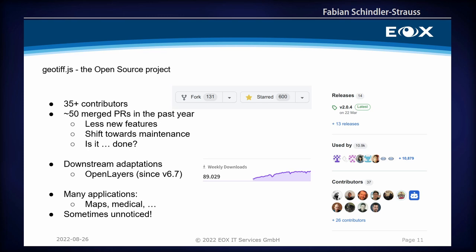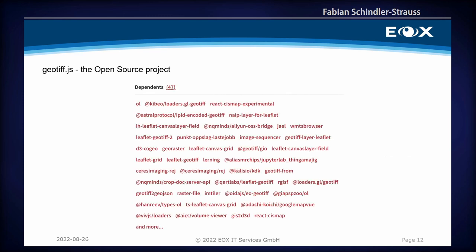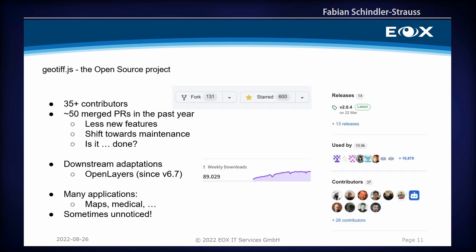There are many downstream projects — 47 dependents on npm. The one I really fell in love with is the OpenLayers integration, done really well and tied into their ecosystem. It's been adopted by OpenLayers since version 6.7. There are also many non-geo applications where this is used — for example, a medical application for viewing body scans or microscopic images, which is a really cool use case.